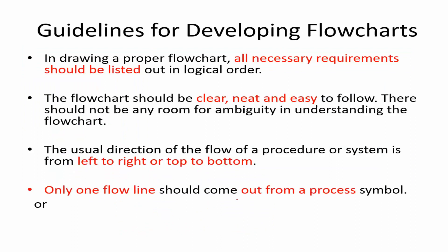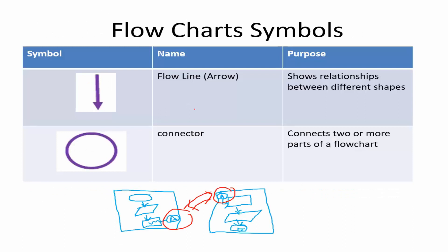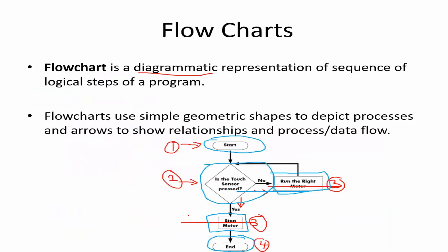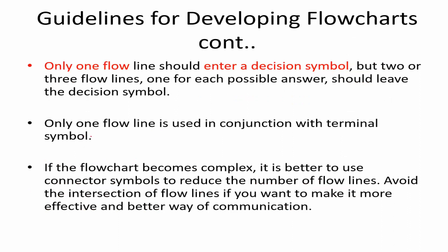Only one flowline should come out of a process symbol. Only one flowline should enter a decision symbol, but two or three flowlines — one from each possible answer — should leave the decision symbol. For a decision box, one flowline enters and two flowlines exit corresponding to the possible answers. If the flowchart becomes complex, it is better to use connector symbols to reduce the number of flowlines. Avoid the intersection of flowlines to make the flowchart more effective.